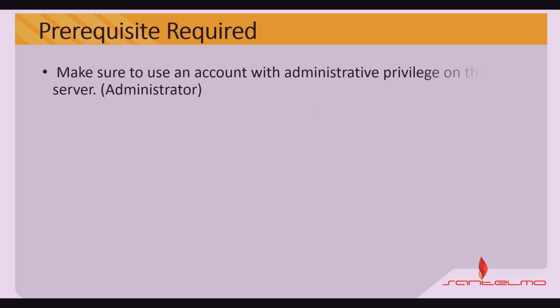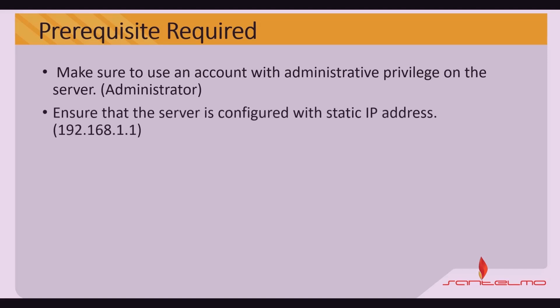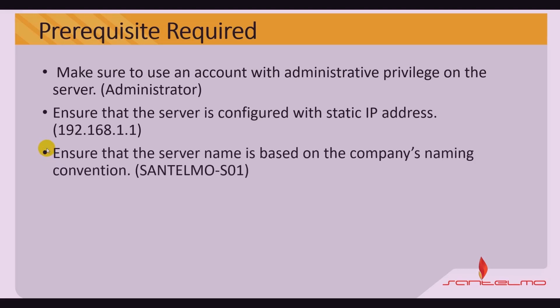To proceed with the video, we have some prerequisites or checklists that we need to check. First, you have to make sure to use an account with administrative privileges on the server, like the administrator. We have to ensure that the server is configured with a static IP address — in this video we will be using 192.168.1.1. We also have to ensure that the server name is based on the company's naming convention, like Sanselmo S01.